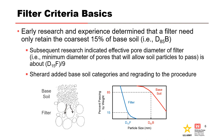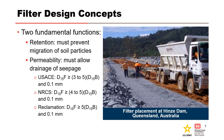Terzaghi is generally credited with the development of modern filter criteria, but Sherrard in 1984 conducted a laboratory study adding base soil categories and regrading to the procedure. If the D85 of the base soil is the same size as the effective pore diameter of the filter, then the D15 of the filter equals 9 times the D85 of the base. This criterion applies to base soil category 1, which are soils with fines contents greater than 85%. There are two fundamental functions of filters: particle retention and permeability.